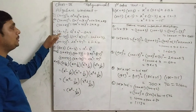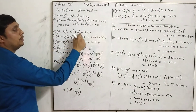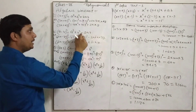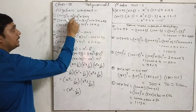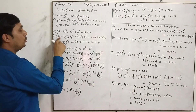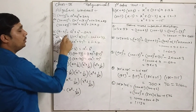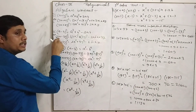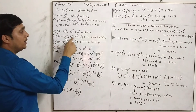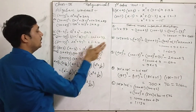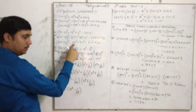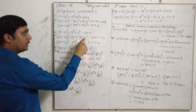Similarly, (a − b) whole square equals a squared plus b squared minus 2ab. For example, (√2x − 3y) whole square gives 2x² + 9y² − 2×√2x×3y, which simplifies to 2x² + 9y² − 6√2xy.